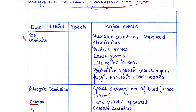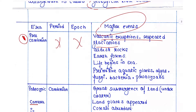The first era is the Pre-Cambrian. This era is not divided into any further period or epoch. The major events to remember are volcanic eruptions and repeated glaciations. The oldest rocks are available during Pre-Cambrian, the Earth basically formed during that time, and life begins in the sea for the first time. Primitive aquatic plants, algae, fungi, bacteria, and protozoa are the first organisms found in the Pre-Cambrian.